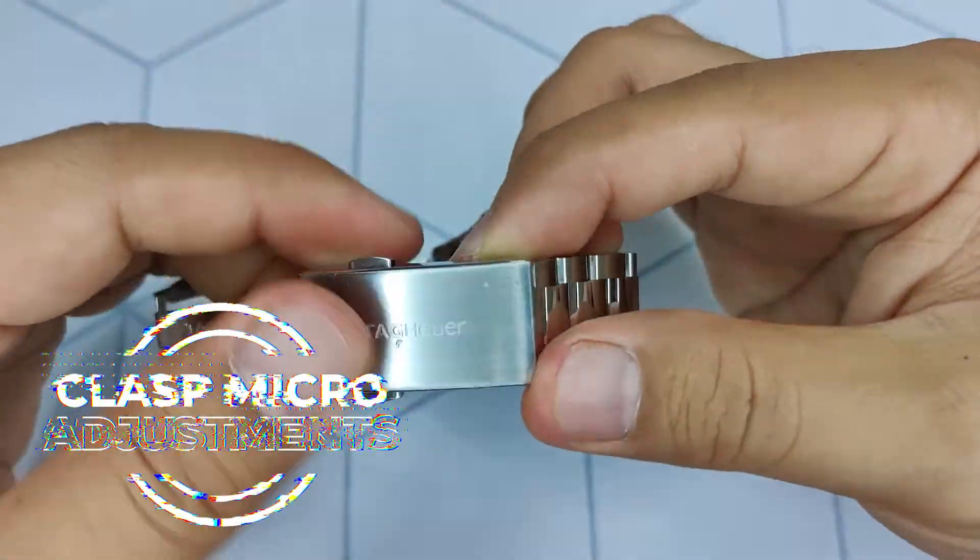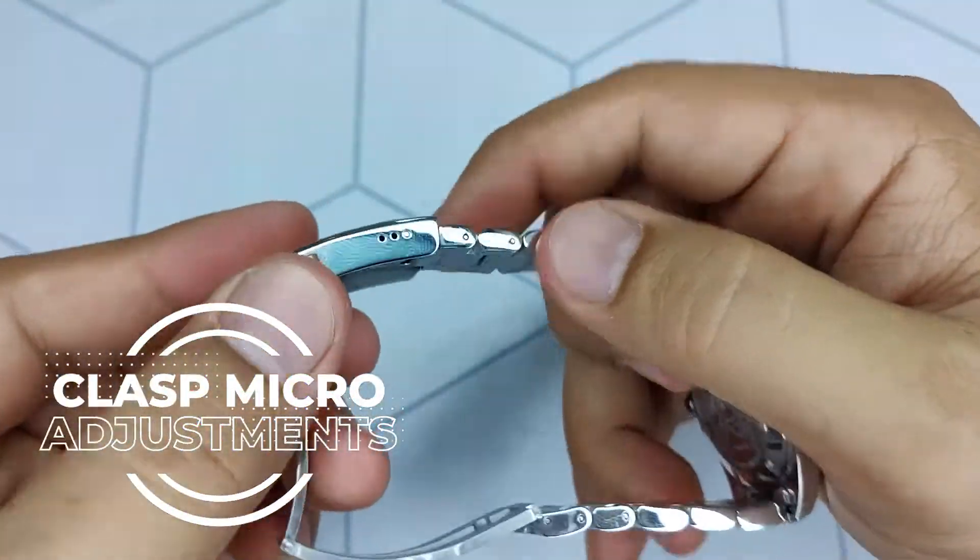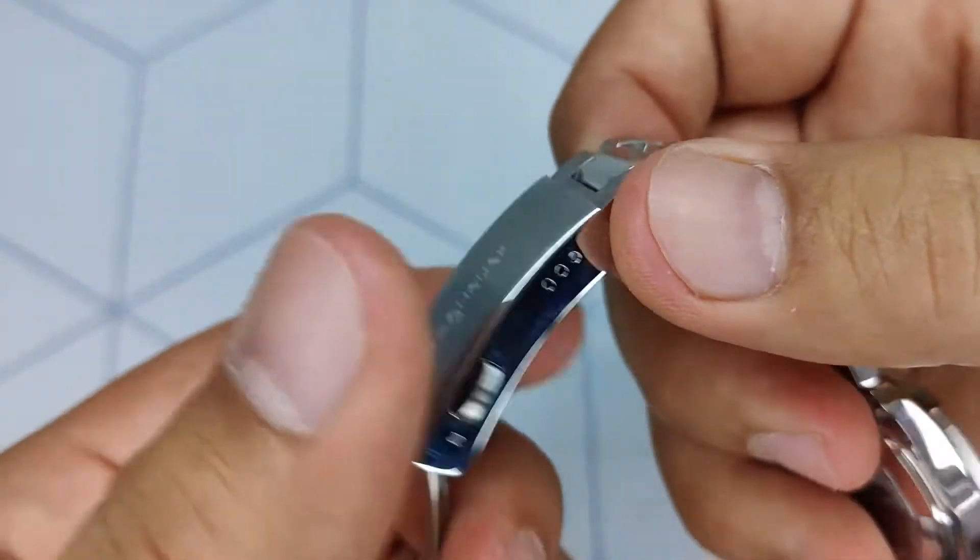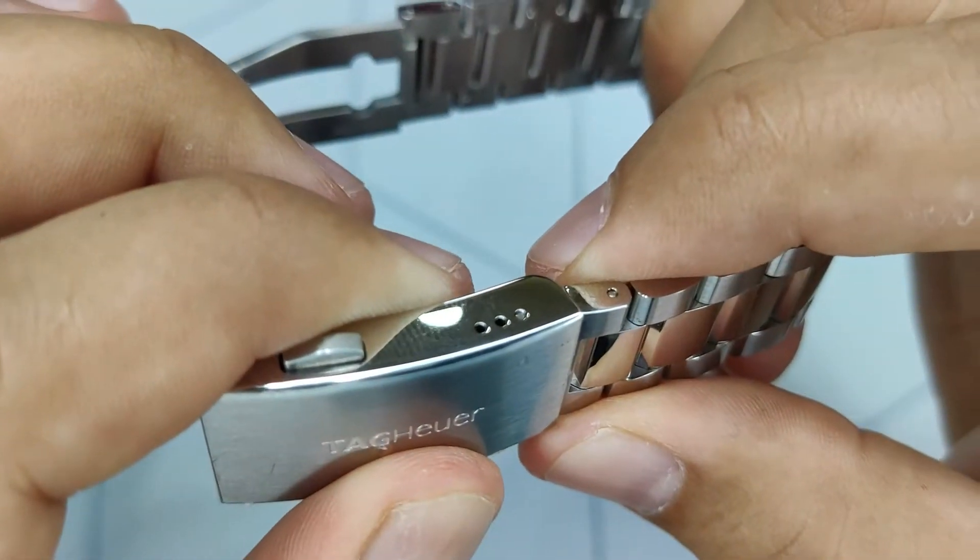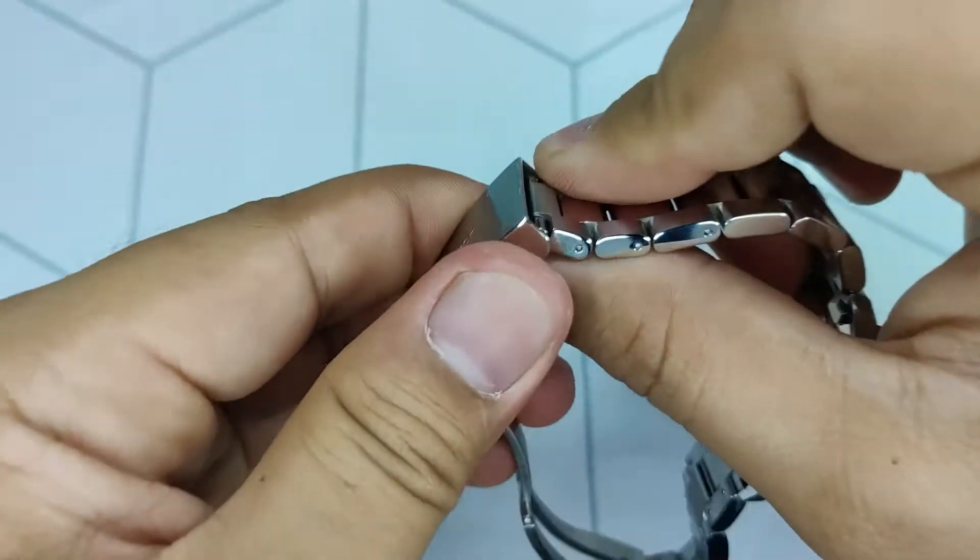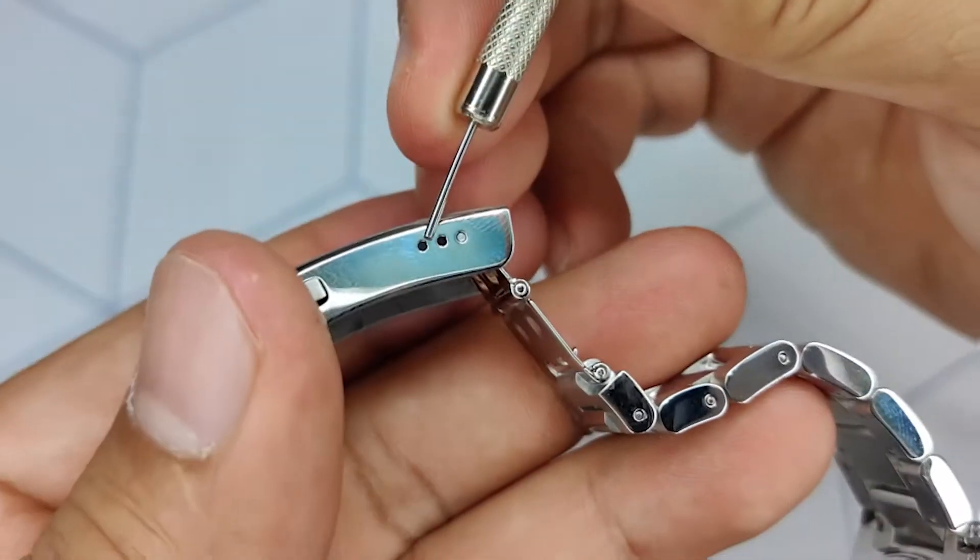Next, let's do the fine tuning on the clasp micro-adjustment. This watch has three micro-adjustment holes on the clasp. Other watches may have more. First, disengage the lock and start on one side.